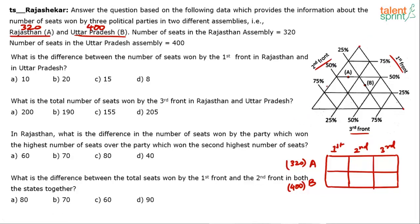Similarly, this axis from top to bottom shows the percentage values for the Second Front: 25%, 50%, 75% — this is 100% and this is 0% for the Second Front. And this axis is for the Third Front: 25%, 50%, 75%. Now look at point A. If you observe, A is on the straight line representing 50% — so the First Front for assembly A is 50%.